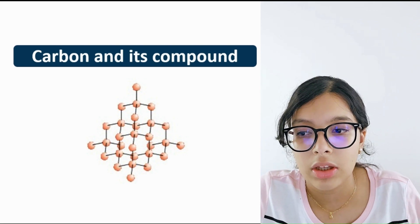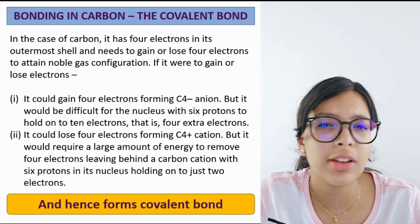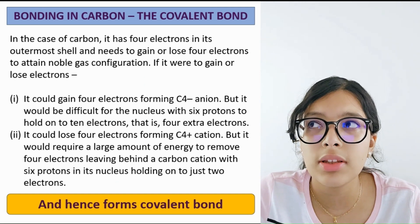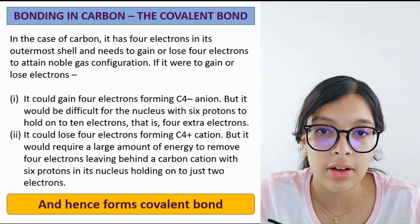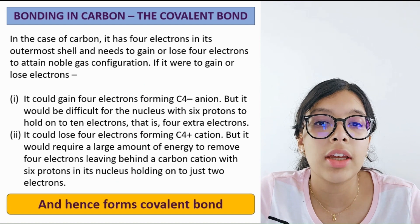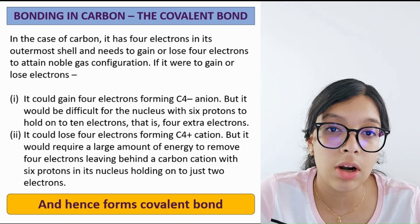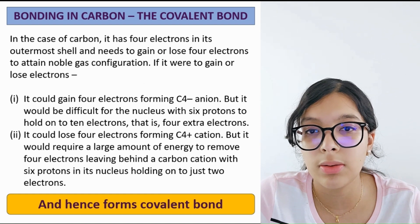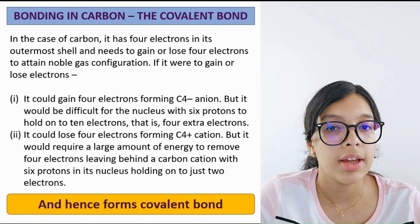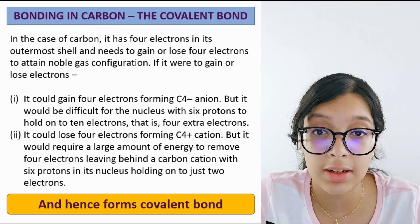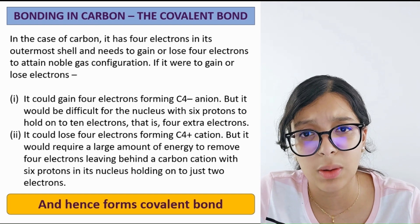Your first topic is bonding in carbon, which is the covalent bond. Now, we learned about ionic compounds last chapter, wherein ions react with each other — metals and non-metals. Metals used to release electrons, whereas non-metals used to take on electrons in order to fill their valence shell. Here, it is the opposite.